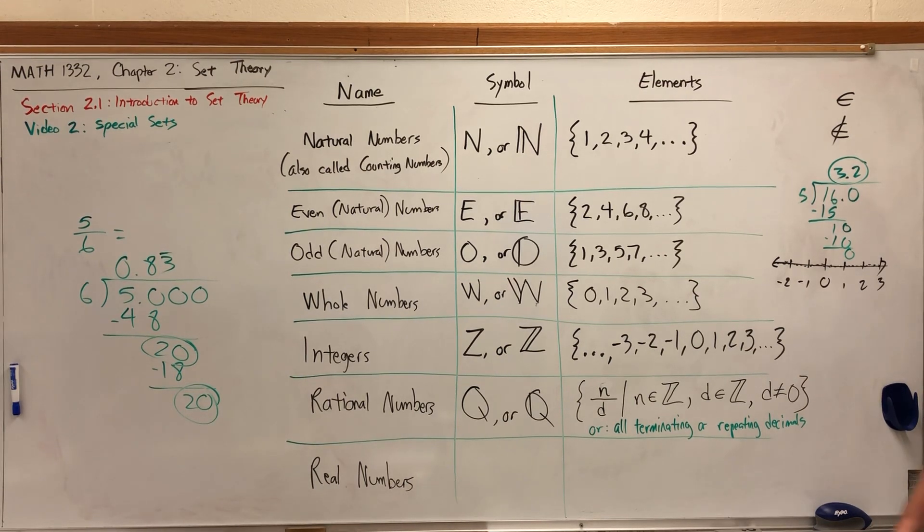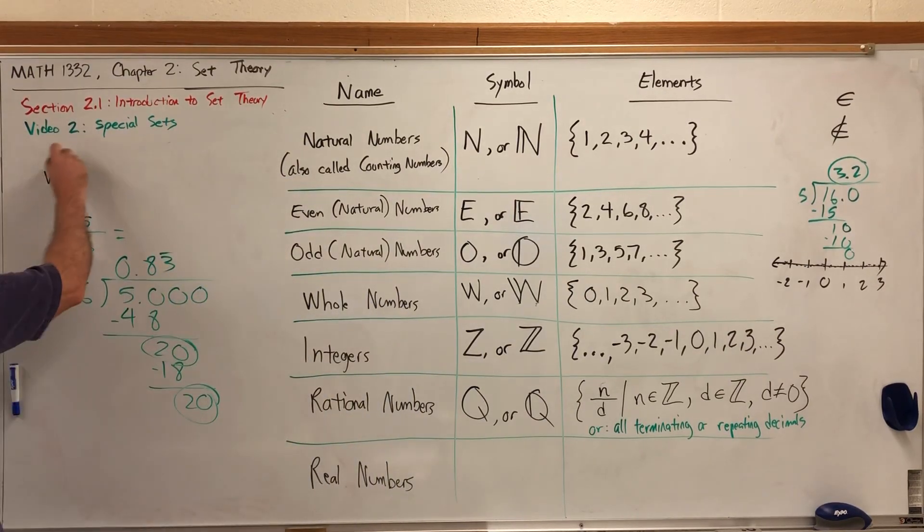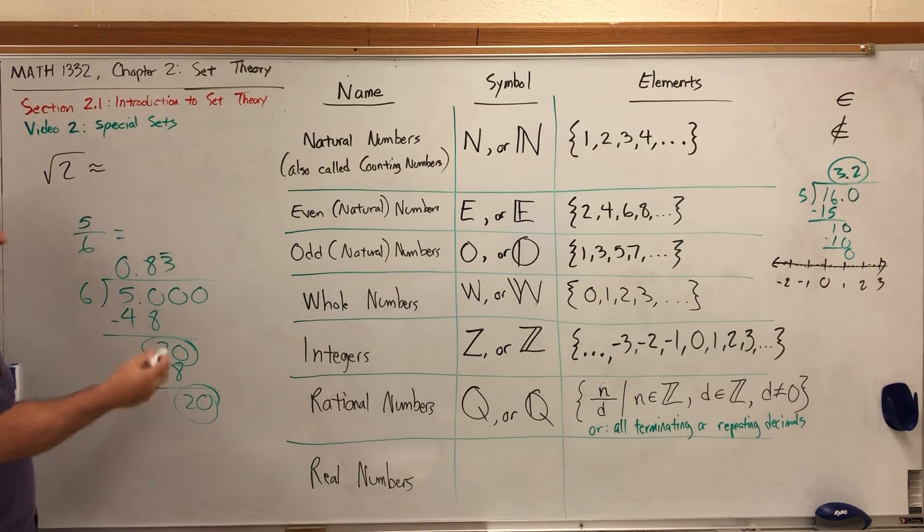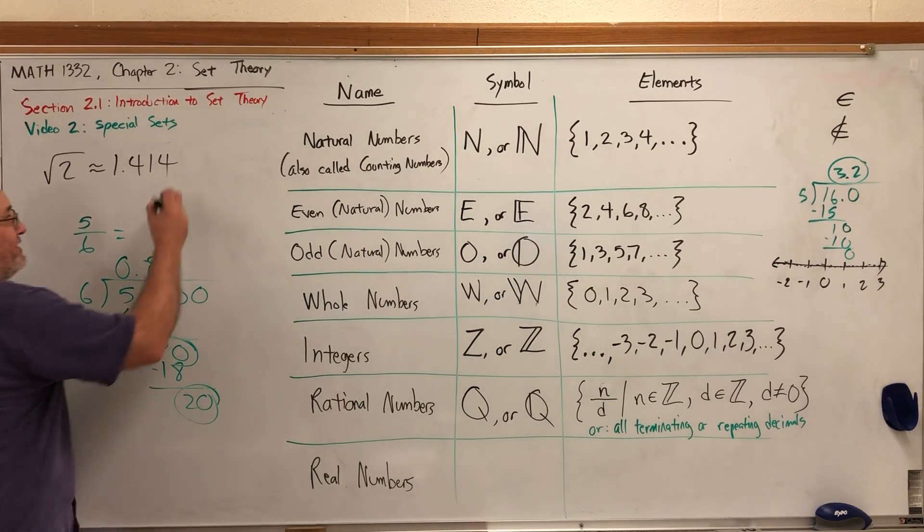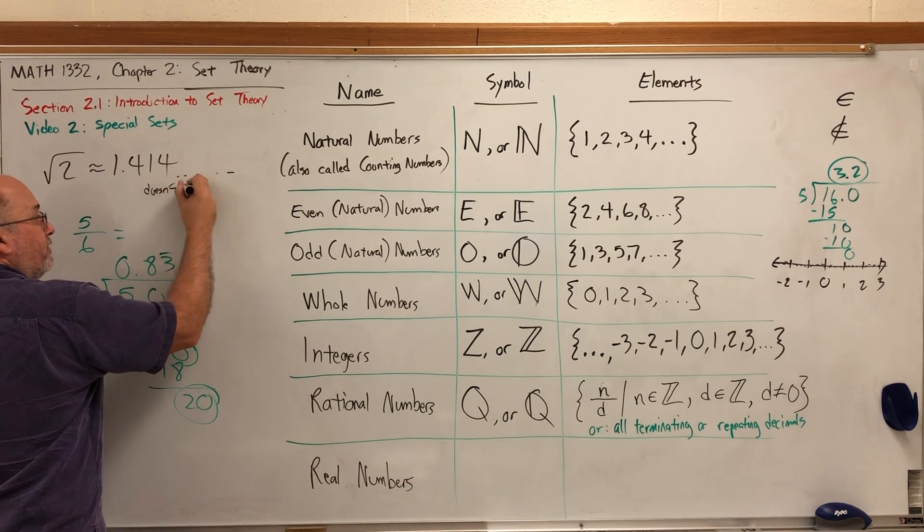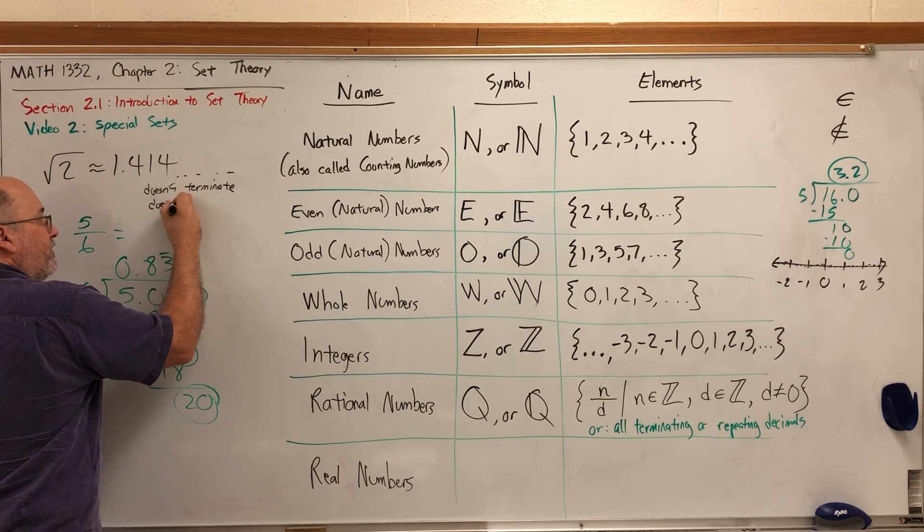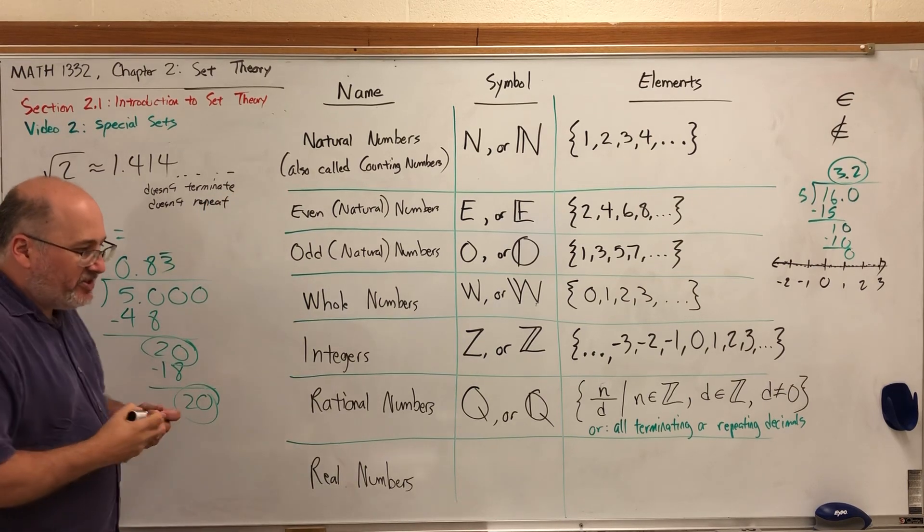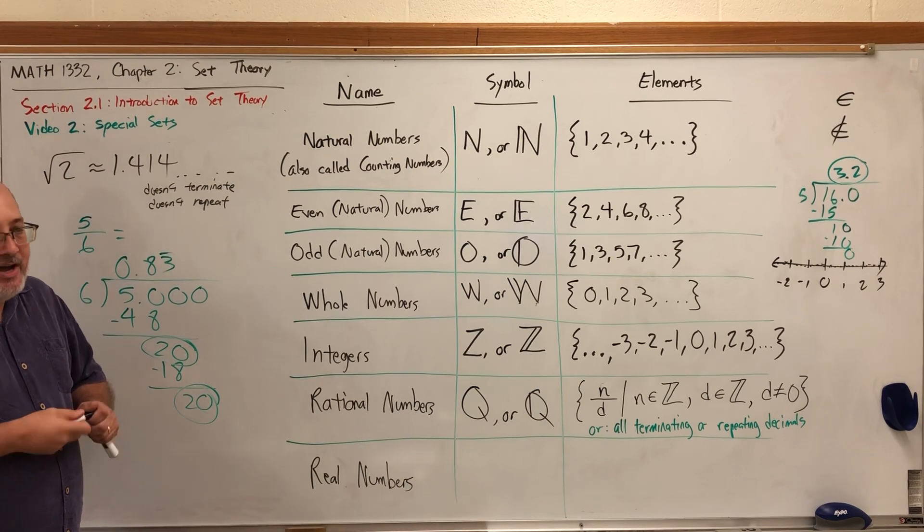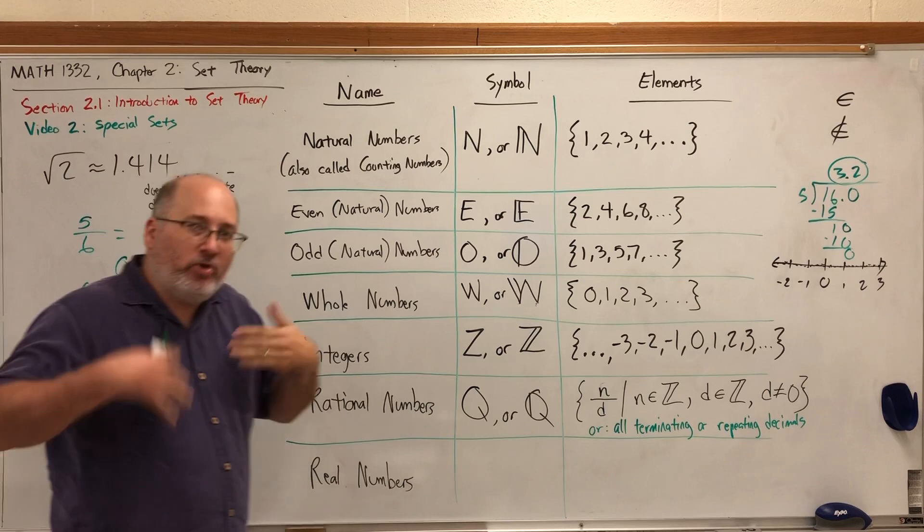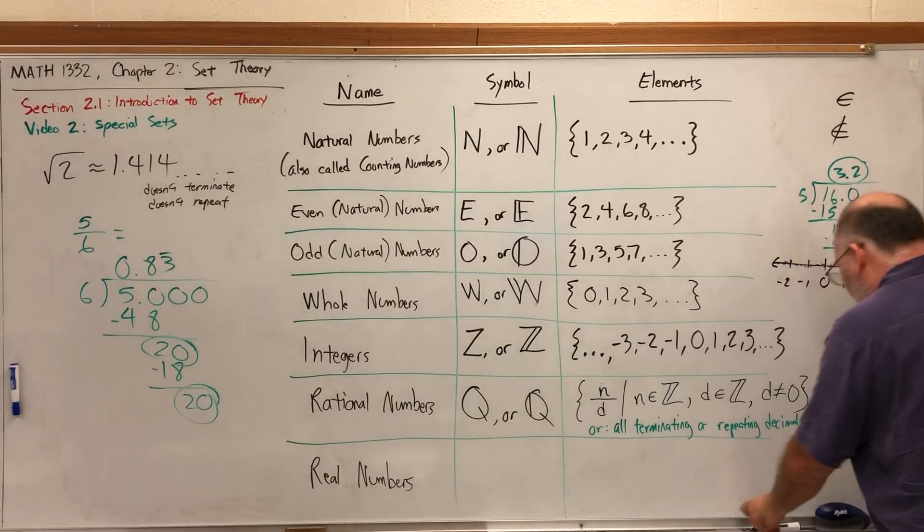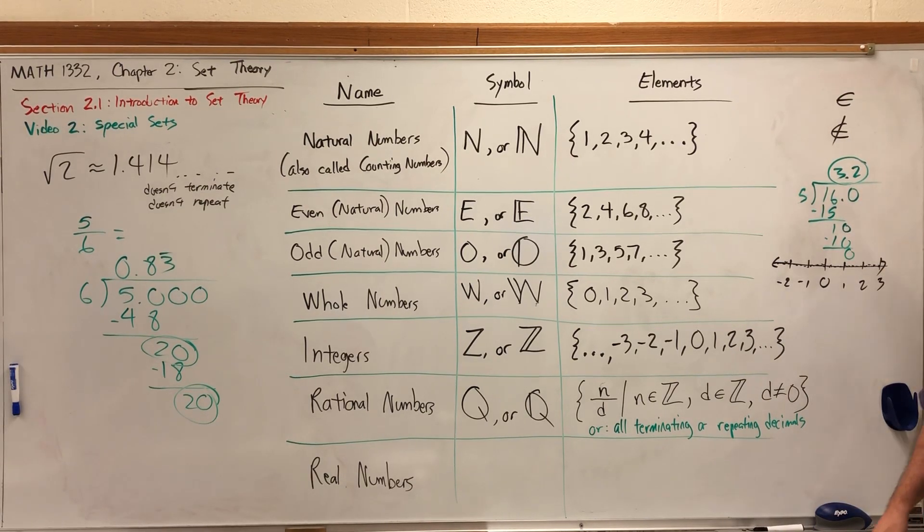So what's missing? If this contains all the decimals that either end or repeat, then it's missing all the decimals that don't end and simultaneously don't repeat. And there are such decimals. For example, the square root of 2. If you put it in a calculator, you'll get about 1.414. As a decimal, this doesn't end, it doesn't terminate, and it doesn't repeat. It doesn't repeat in the sense that there's a pattern that repeats over and over. There are more decimals that don't terminate and repeat than decimals that terminate or repeat.